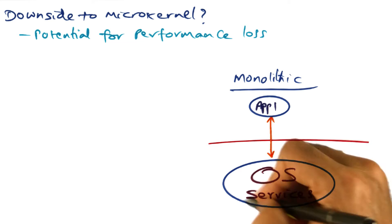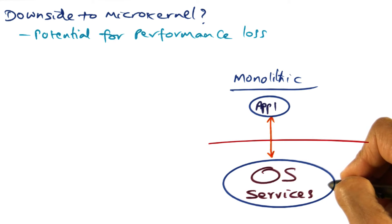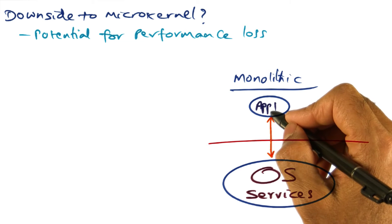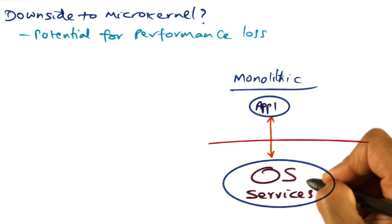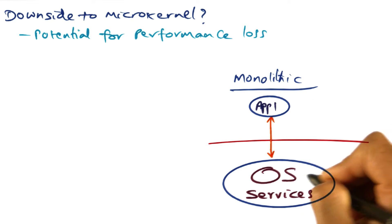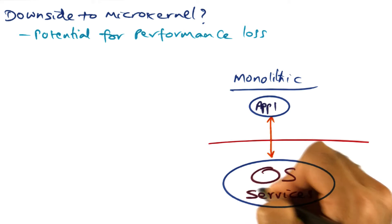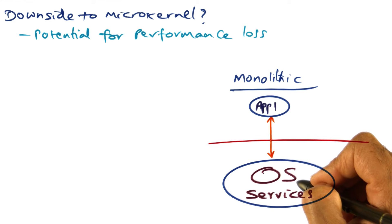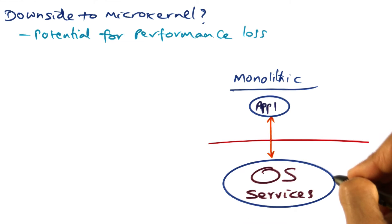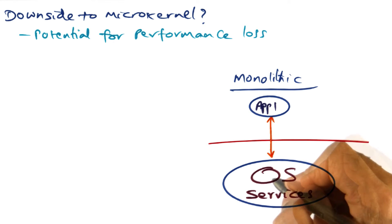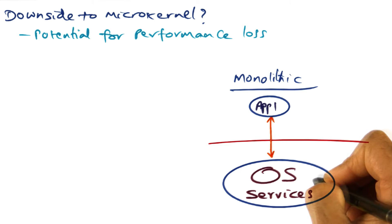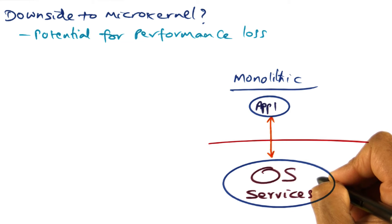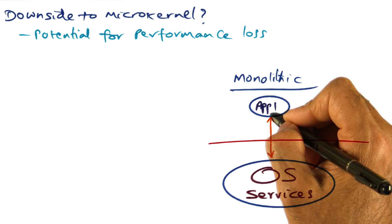And once inside the operating system, all the work that needs to be done in order to satisfy the file system call that the app made — for instance, contacting the storage manager, contacting the memory manager, and so on — all of that is available as components within this blob, which means that those components can be accessed at the speed of a normal procedure call in order to handle the original request from this application.